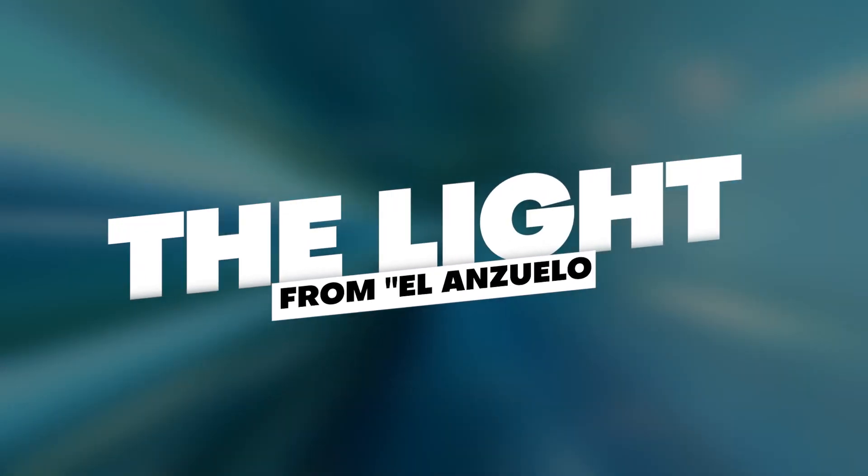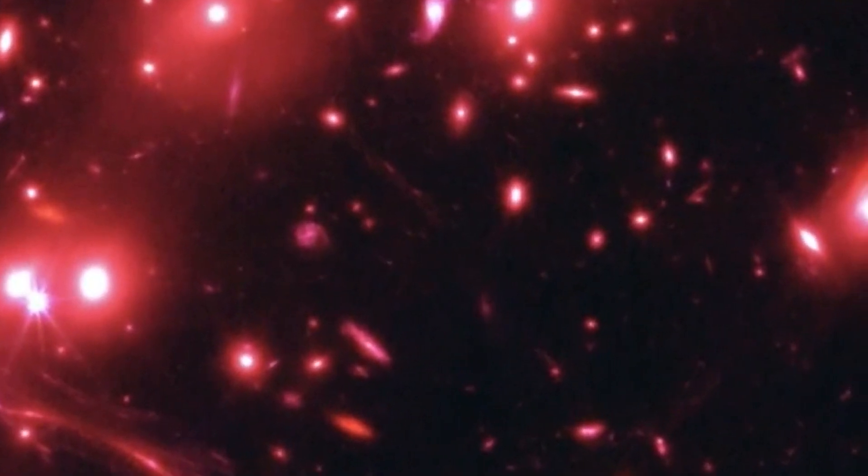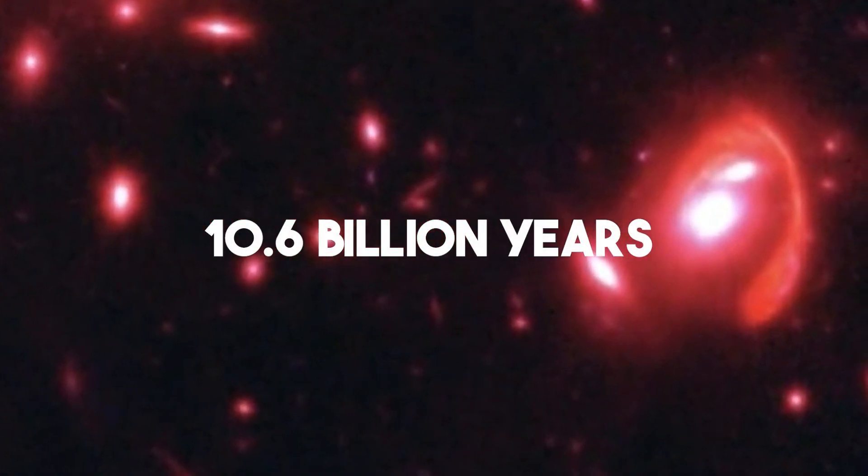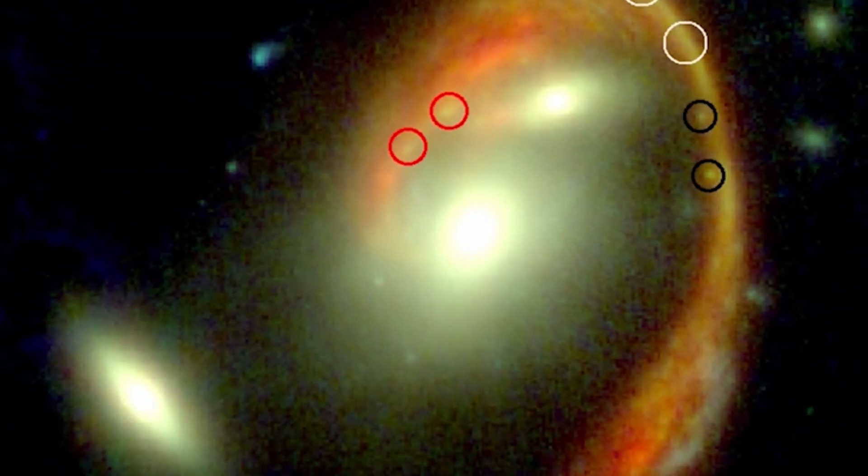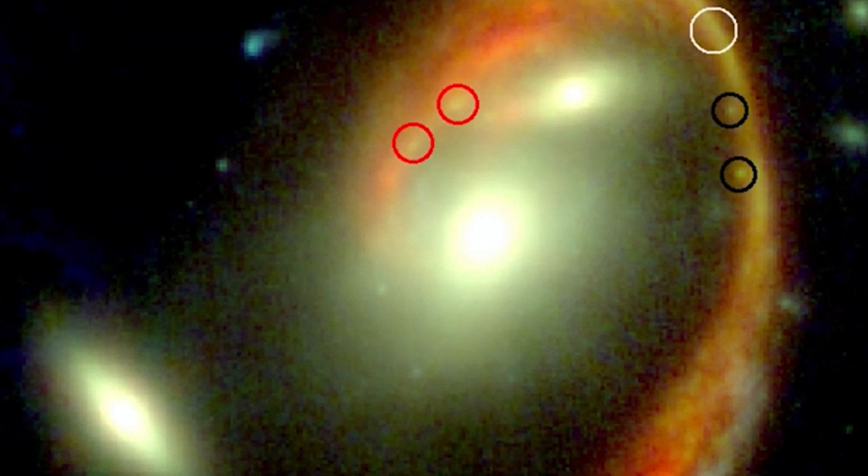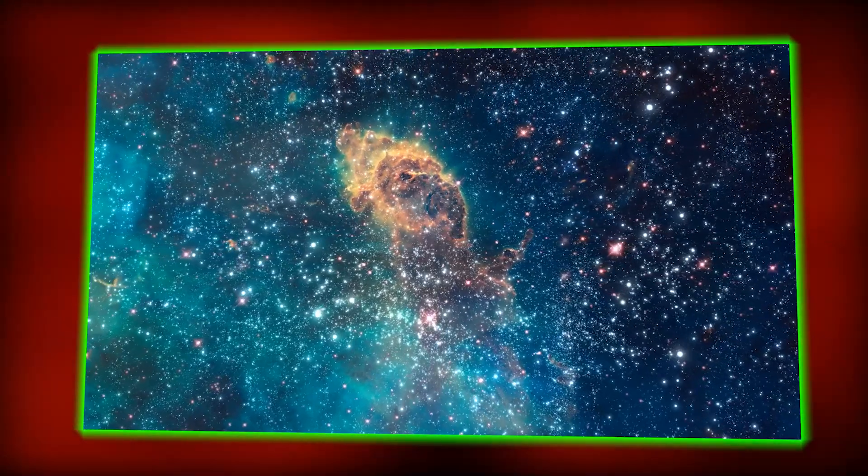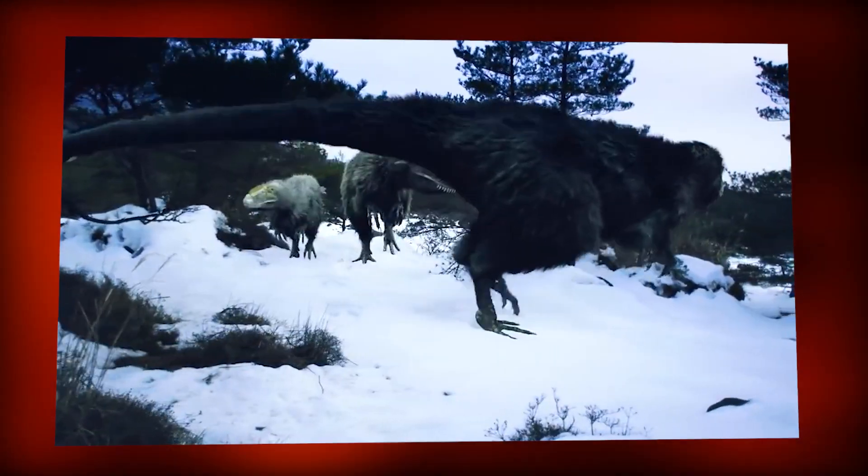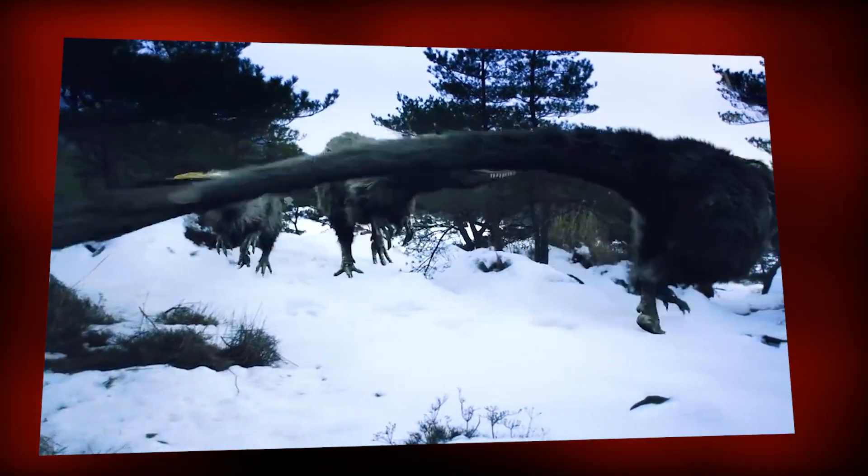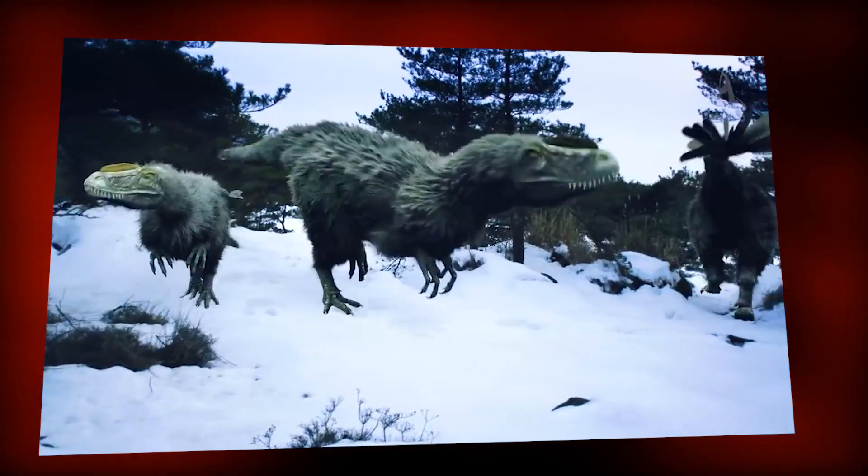Now, brace yourself for this cosmic time-travelling fact. The light from El Anzuelo took a jaw-dropping 10.6 billion years to reach us. Wrap your head around that. It means that the light we're seeing now was emitted when the universe was a cosmic teenager, way before the dinosaurs were even a twinkle in evolution's eye. We're literally peering back into the past, catching a glimpse of this distant galaxy in its early days.